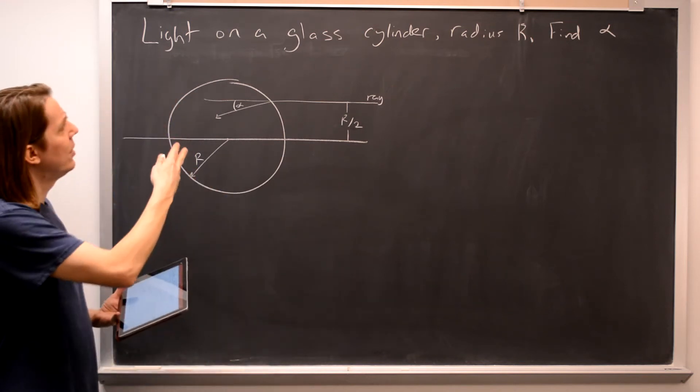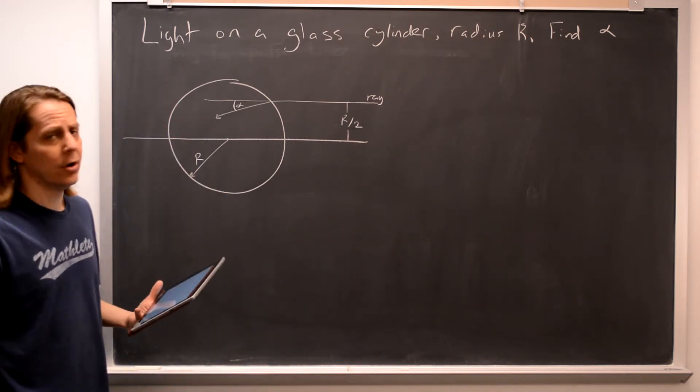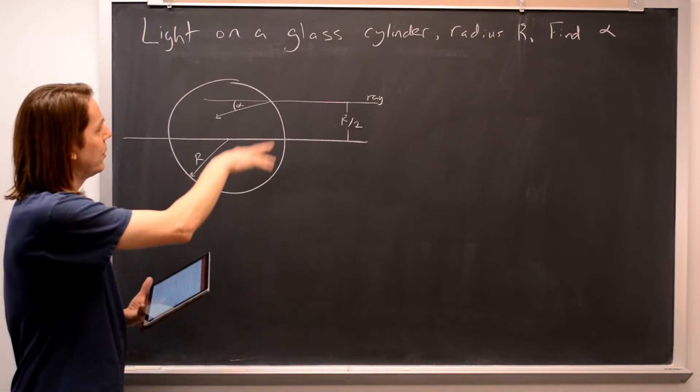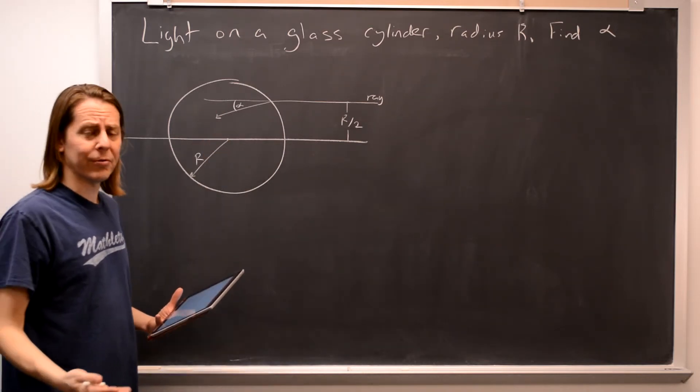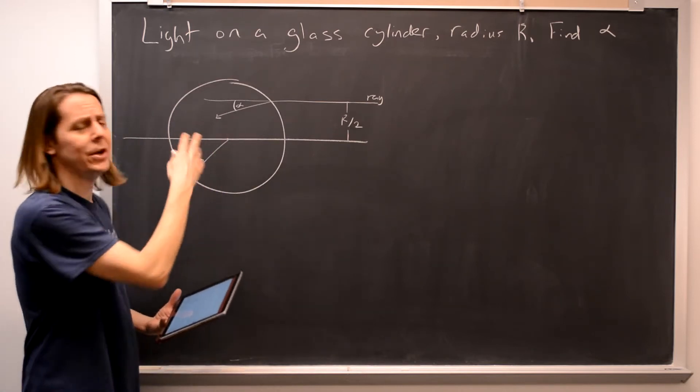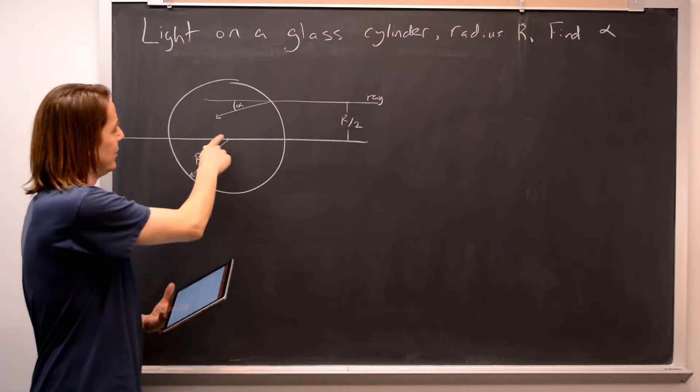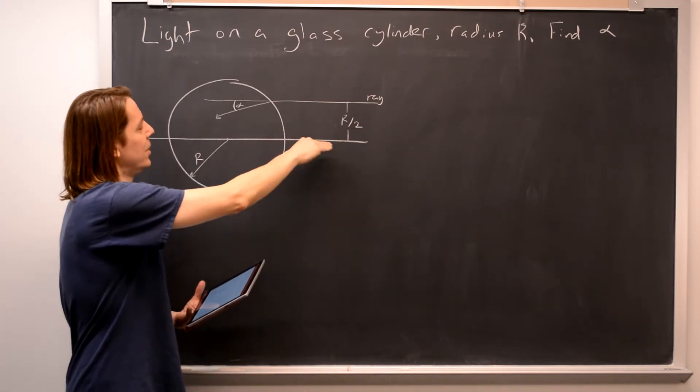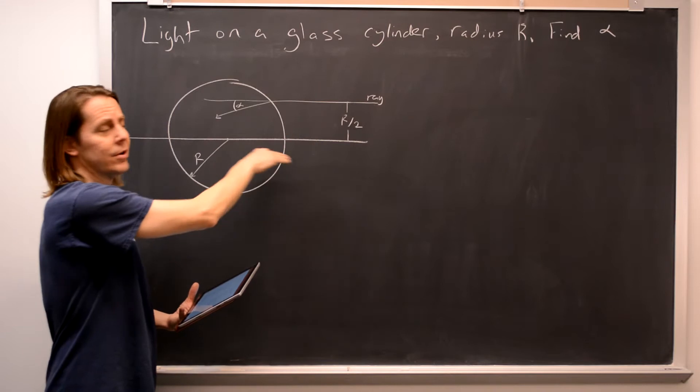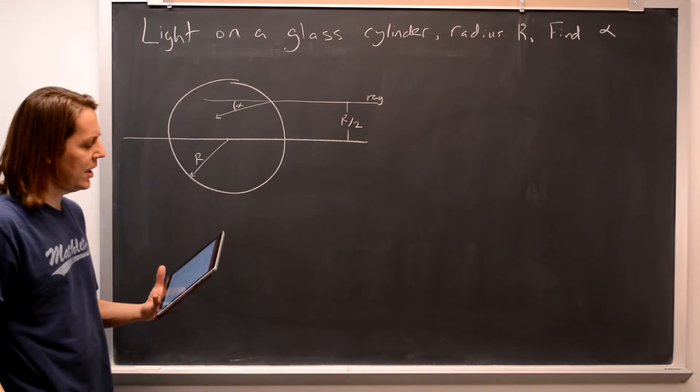In this one we've got light on a glass cylinder, radius R, and they draw it for you and say find the angle alpha. It's a little weird they ask you for a number for alpha in degrees when you weren't given any numbers, but you'll see the reason is this R and this R are going to cancel. The height of the ray above the optical axis through the center is R over 2, so you'll see how it cancels.